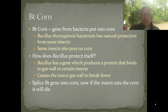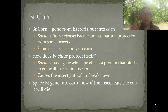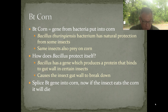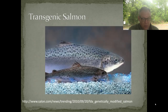We took the gene that makes that protein from the Bacillus bacterium and spliced it into corn. Now the corn can produce that same protein. If those insects eat the corn, that protein gets in their gut, breaks down their gut wall, and kills them. You've given this corn the ability to produce its own insecticide. That's a common genetically modified organism you're going to find here in the US.